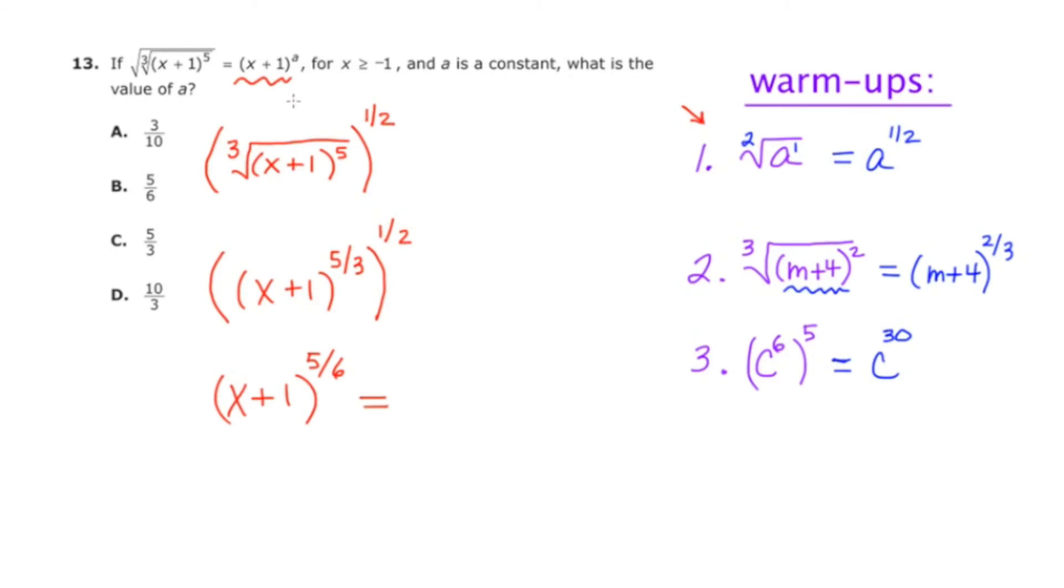And this just says x plus one to the a. So both the left and the right-hand side look almost equivalent at this point, except over here the exponent is five-sixths and over here the exponent is a.